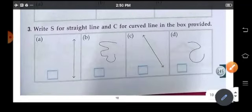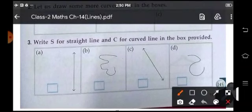So write S for straight line and C for curved lines in the box. So this is a straight line S, this is a curved line C, straight line S and curved line C.